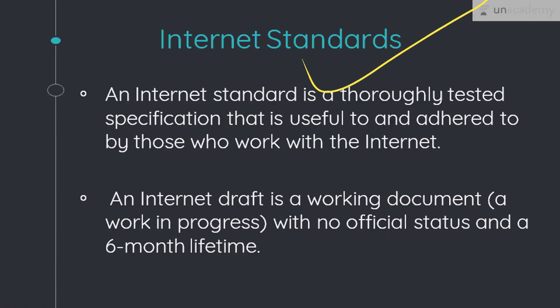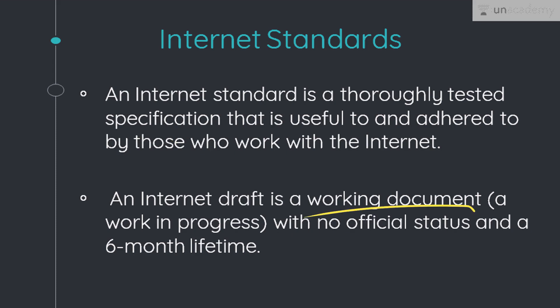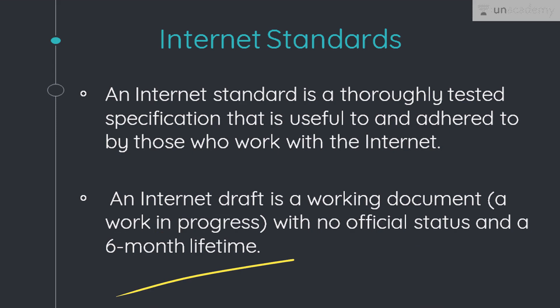Next, let's look at internet standards. An internet standard is a thoroughly tested specification that is useful and followed by those who work with the internet. There is a strict procedure by which a specification attains internet standard status. A specification begins as an internet draft — a working document with no official status and a six-month lifetime. Upon recommendation from internet authorities, a draft may be published as a Request for Comment (RFC). Each RFC is edited, assigned a number, and made available to all interested parties. RFCs go through maturity levels and are categorized according to their requirement level, and that's how they finally attain the status of internet standard.